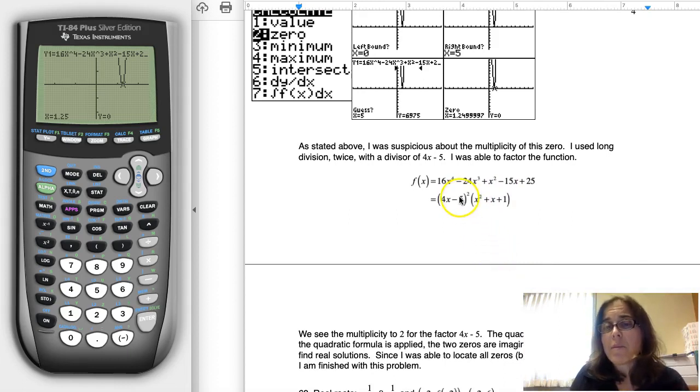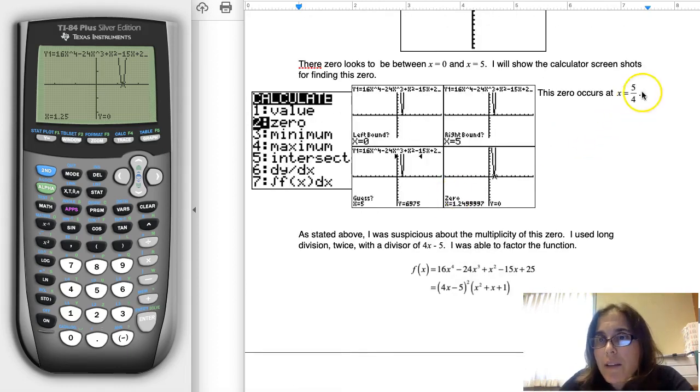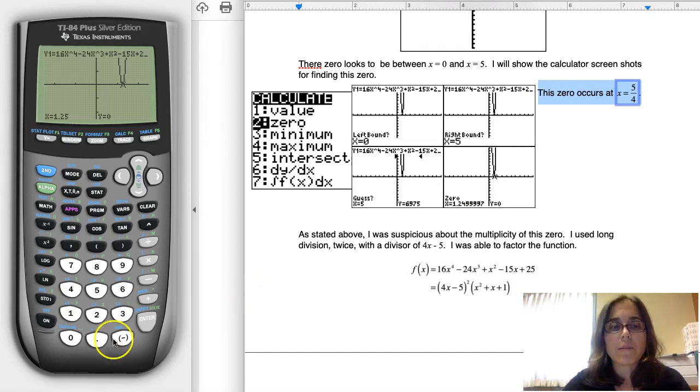So since that didn't factor, it meant my only, or I should say, it doesn't factor over the real numbers. You could use the quadratic formula, and you would find out that there were imaginary solutions. But this question asked us to only find the real ones. So the only real zero that I have here is 5 fourths. So that's why I have here the zero occurs at 5 fourths, and that is my only zero in this problem.